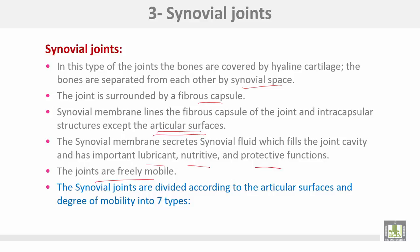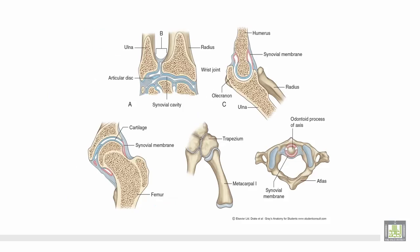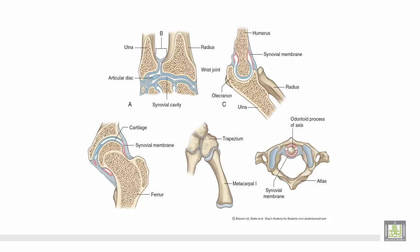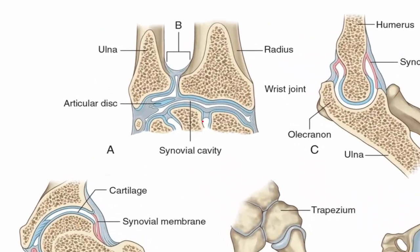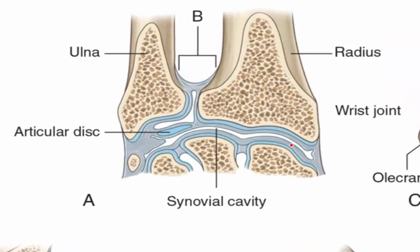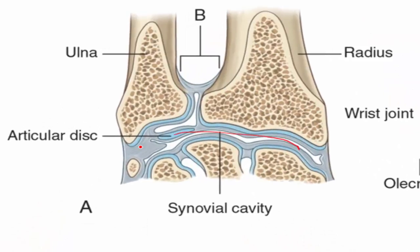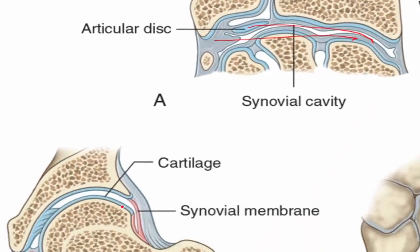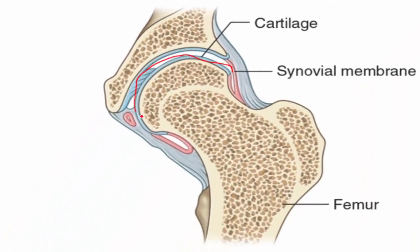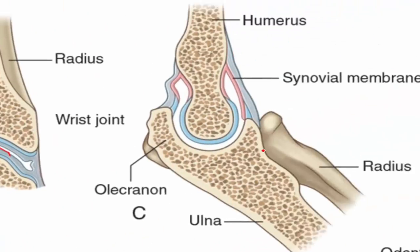Synovial joints are freely mobile and are divided according to articular surfaces and degree of mobility into seven types. Shown here are the different types: this is an ellipsoid joint, this is a ball and socket joint, and this is a hinge joint.